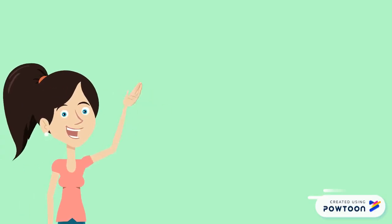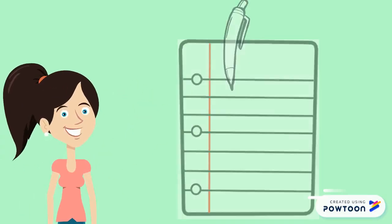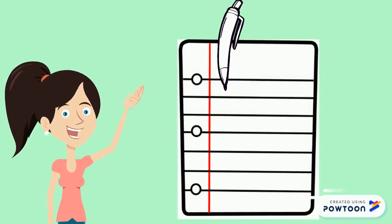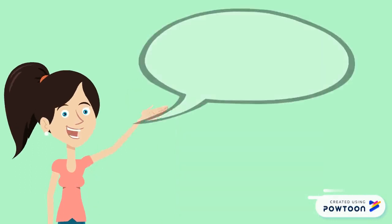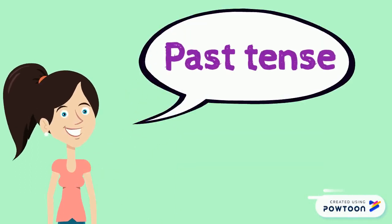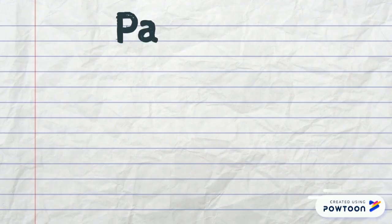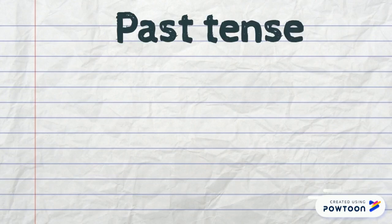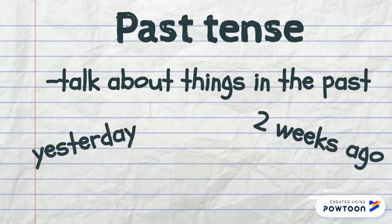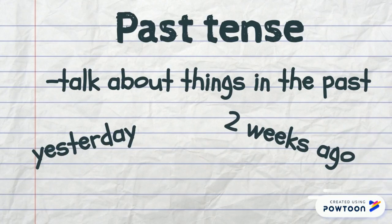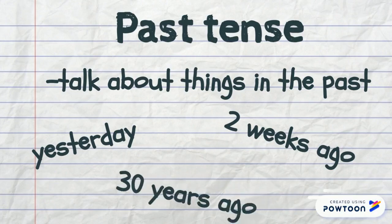Hi Grey One! I enjoyed reading your personal narrative writing from the last lesson. Today I would like to talk about past tense. Past tense is used to talk about things that have already happened in the past. You use past tense to talk about events that happened yesterday, or two weeks ago, or things that happened 30 years ago.